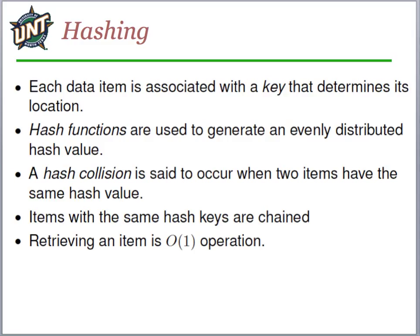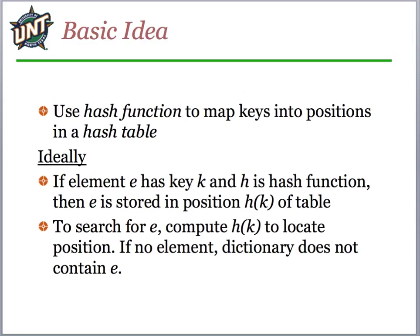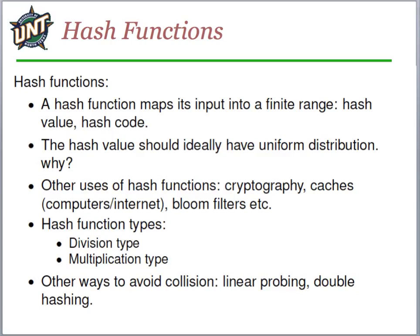We use a hash function to map the keys into positions in the actual table where the data really is. If an element e has a key k, and h is the function, then e is stored in position h(k) of the table. In a perfect world with infinite storage, every element would have a unique key with a unique entry and the function would be a one-to-one relationship. Typically that's not the case — either because we don't want to maintain that many keys, or we don't have enough storage for every possible key to have its own location.